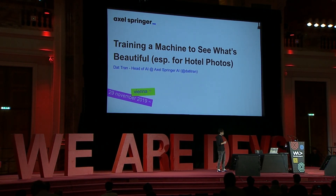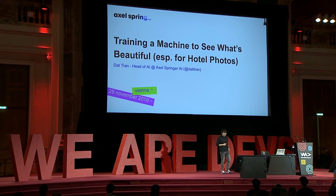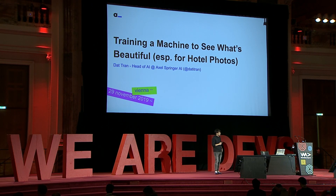Hello Vienna, a warm welcome from me. I hope you enjoy the conference and the party yesterday. Today I would like to talk about how we actually train a computer to understand aesthetics, which is quite a difficult problem. A picture is worth a thousand words, especially when you look at the internet — Instagram, Snapchat, or even Tinder. We are a Tinder generation: you swipe left or right very fast, and it's all about the first picture. This is especially true for hotel photos.